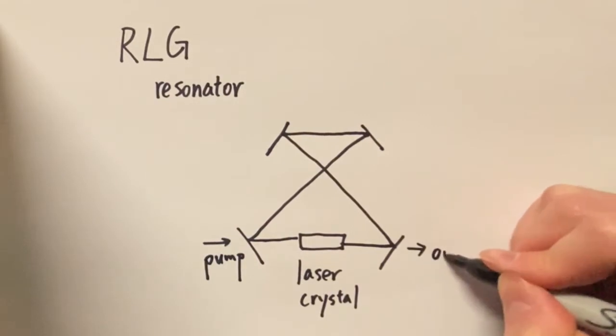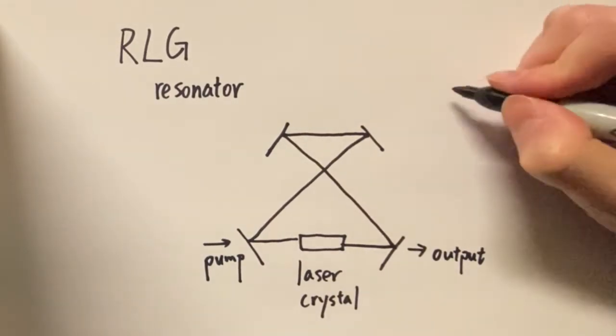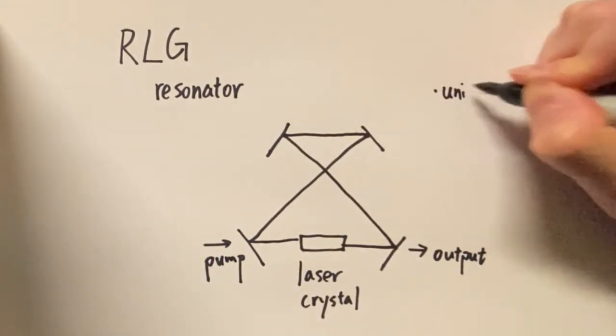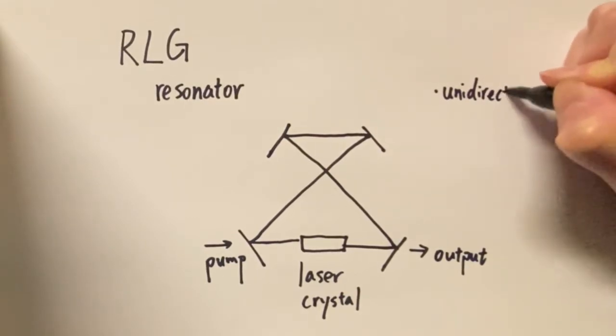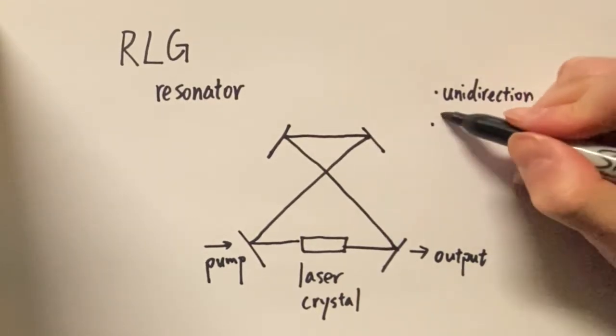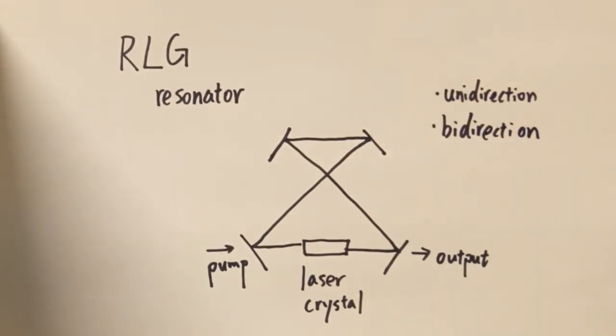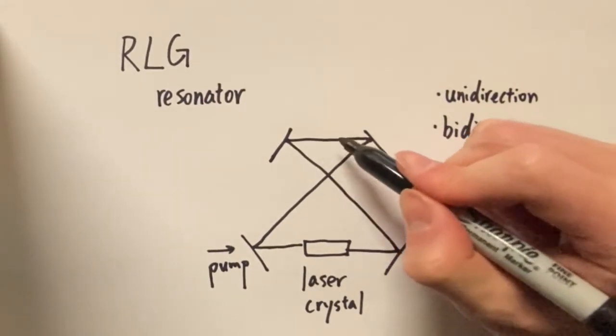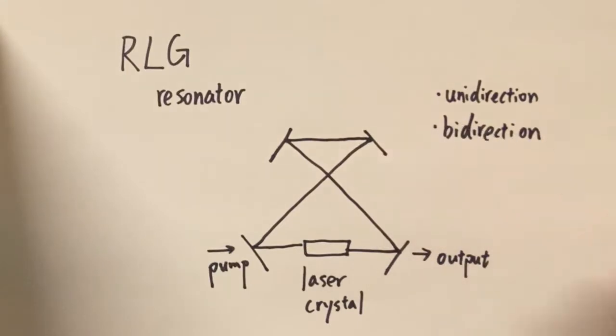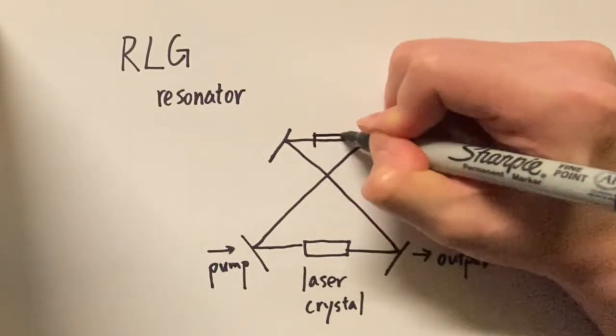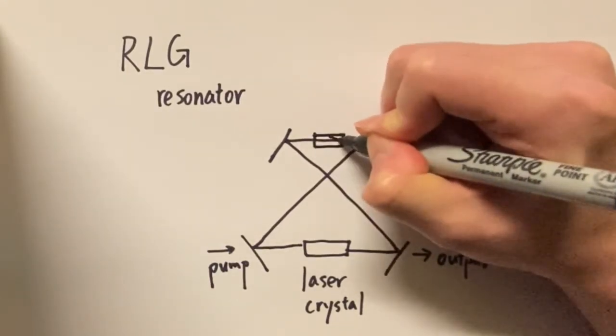One of the key points to understand here is unidirectional or bidirectional. What makes the ring laser special? Its ring resonator allows for two different propagation directions of light inside the cavity and ring laser can choose whether to operate in unidirection or bidirection.